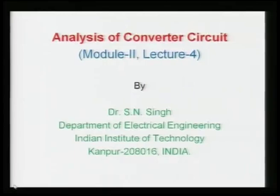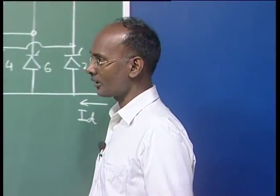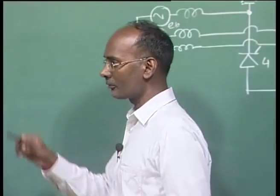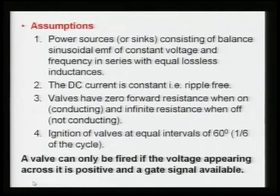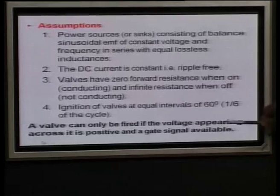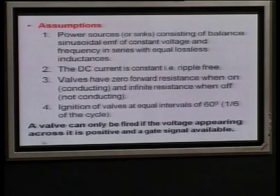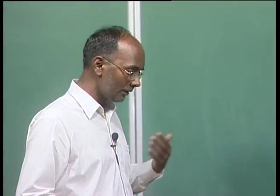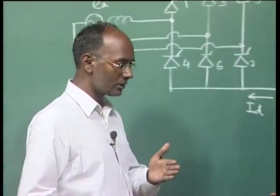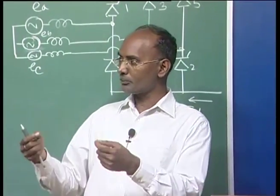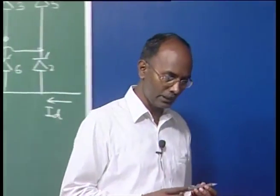Today we will discuss converter circuit analysis for the ideal case when there is no overlap. The assumptions are the same as previously discussed. One key assumption is that a valve can only be fired if the voltage appearing across it is positive and a gate signal is available. Gate pulses are given every 60 degrees, and the valve fires only if the voltage is positive.